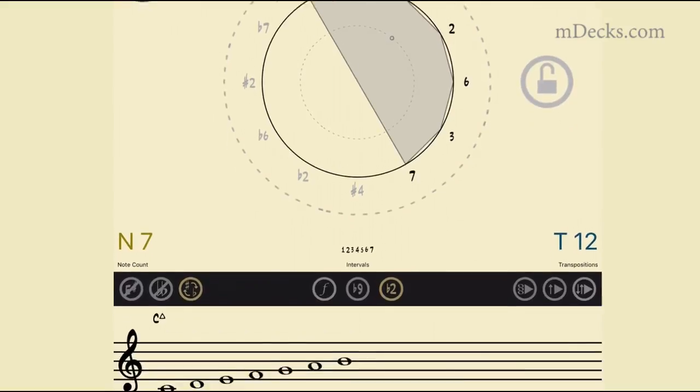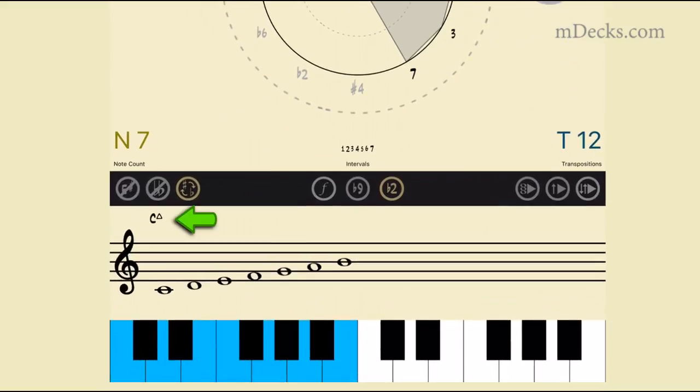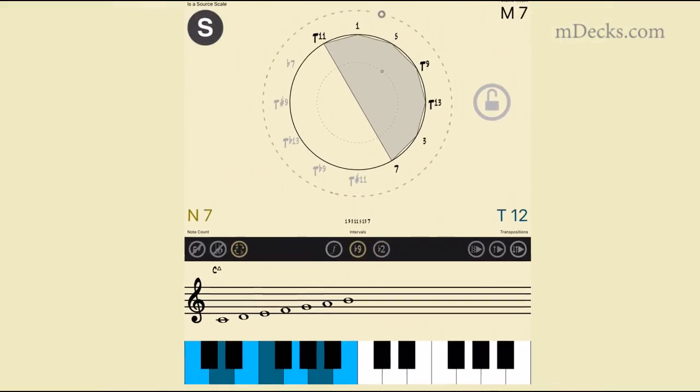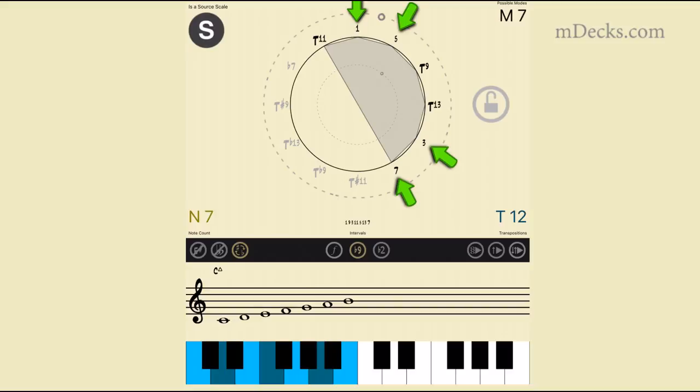If we build a chord with this scale we get a major seventh chord. The chord tones are one, three, five, and seven. And the tensions are nine, eleven, and thirteen. Let's listen to it.